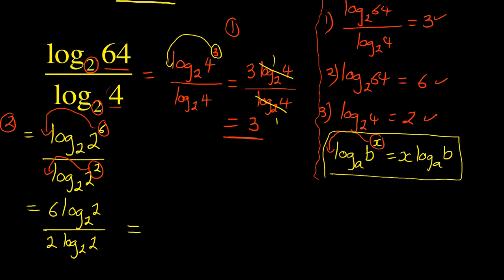You can see that log base 2 cancels, you've got 6 over 2. But I can choose to use another law. Remember, there is another law which says log base a of a is equal to 1. Whenever the base and the number repeat, it's equal to 1. So you've got 6 times 1 over 2 times 1. You could have cancelled or used this way. Either way, 2 into 6 is 3, and the answer finally becomes 3.